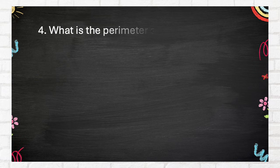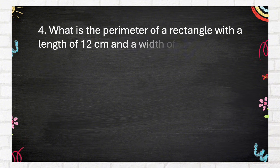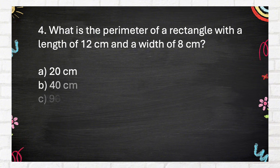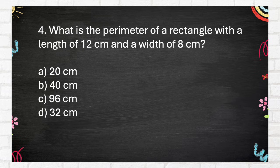Question number 4: What is the perimeter of a rectangle with a length of 12 cm and a width of 8 cm?